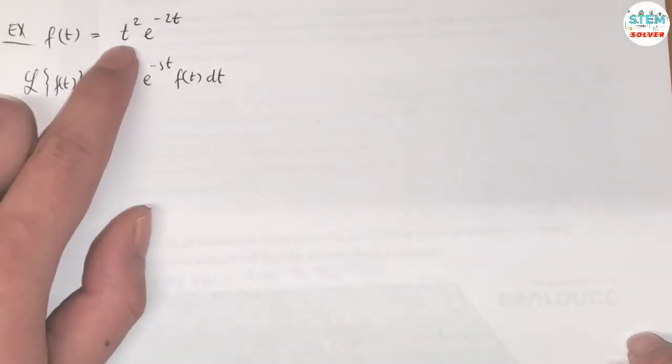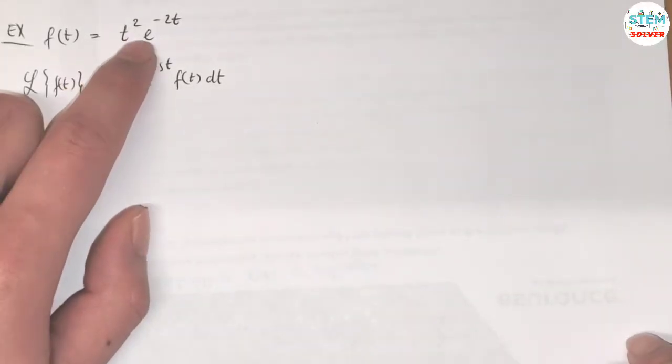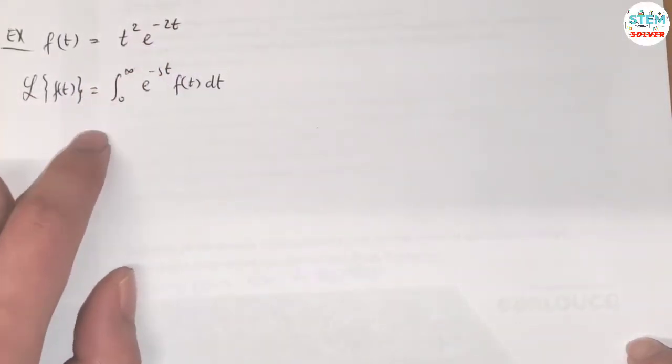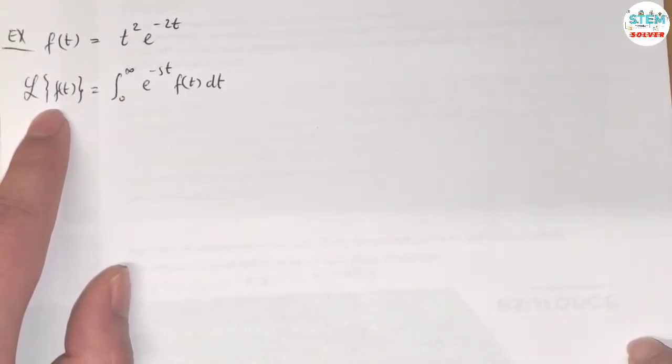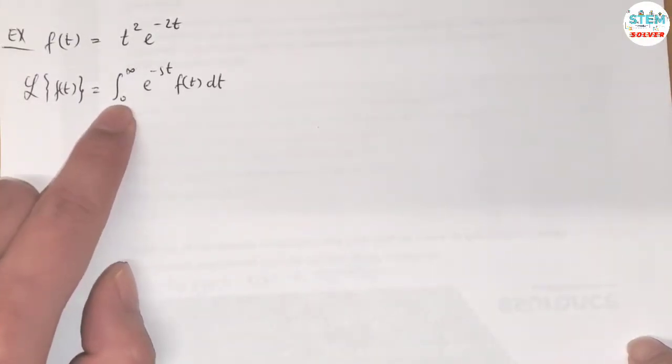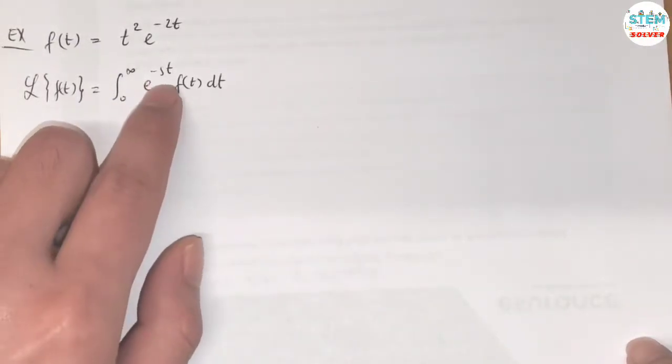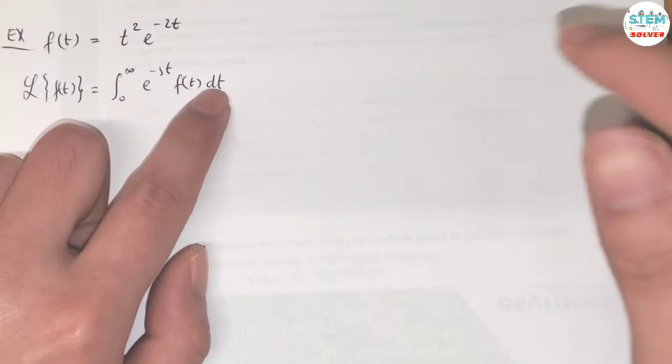Find the Laplace transform of t squared times e to the negative 2t. By the definition, the Laplace transform of f of t is equal to the integral from 0 to infinity of e to the negative st times f of t, dt.